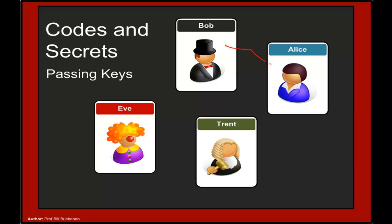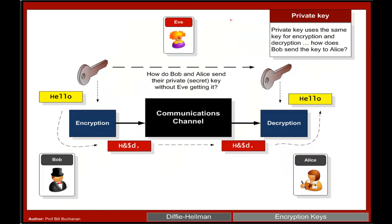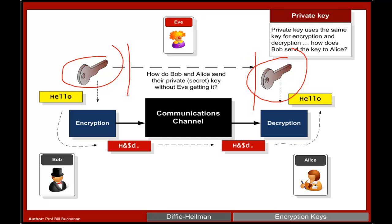Now Bob and Alice can communicate using private key encryption, but the problem is: how does Bob send Alice the key without Eve intercepting it? Once Eve has found the key, Bob and Alice can't tell she has it and can't tell she's decrypting their messages. We need a method for Bob and Alice to communicate openly — with Eve listening — and yet both end up with the same shared key.